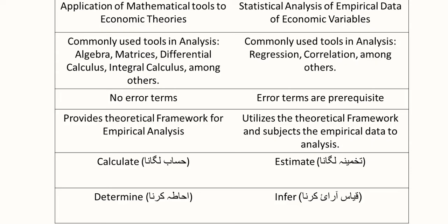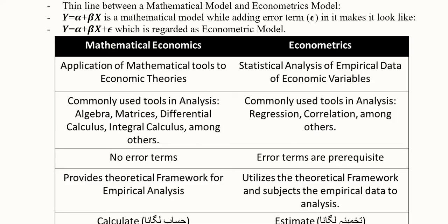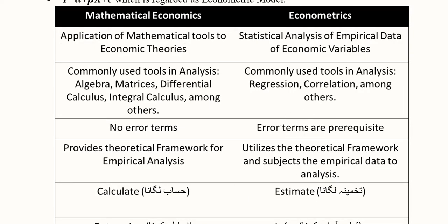In mathematical economics there are no error terms, as seen in the mathematical equation. In the econometric model, however, an error term is always present — it is a prerequisite, as it differentiates an econometric model from a mathematical model. In mathematical economics, a theoretical framework is provided for empirical analysis — we provide a theory that can be tested empirically — whereas in econometrics, that theoretical framework is utilized along with empirical data to analyze and check the hypothesis.